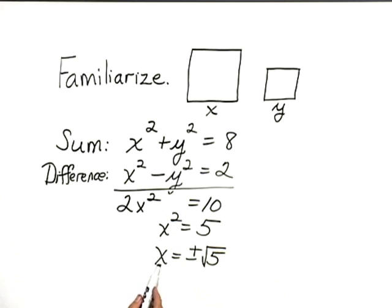Notice that there are two values for x, but one of them is negative. So we'll just use the x value, positive square root of 5.